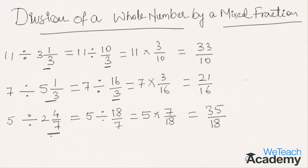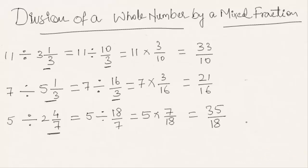So, while dividing a whole number with a mixed fraction, first we need to convert the mixed fraction into an improper fraction, and then we need to multiply the reciprocal of that fraction with the whole number. Hope you understood the concept of dividing a whole number with a mixed fraction. Do like and subscribe to vteachacademy.com. Thanks for watching. Have a nice day.